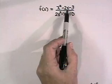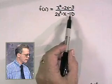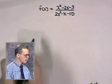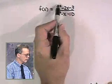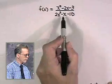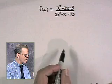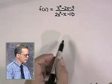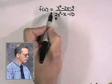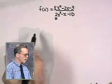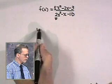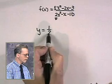Let's take a look at our previous problem to get an idea how that works. Here's our problem again: f of x equals x squared minus 2x minus 3 over 2x squared minus x minus 10. We see that the degree of the numerator is 2 and the degree of the denominator is 2. Since the degrees are the same, we look at the leading coefficients. The leading coefficient of the denominator is 2 and of the numerator is 1. Our horizontal asymptote then has an equation y equals 1 half.